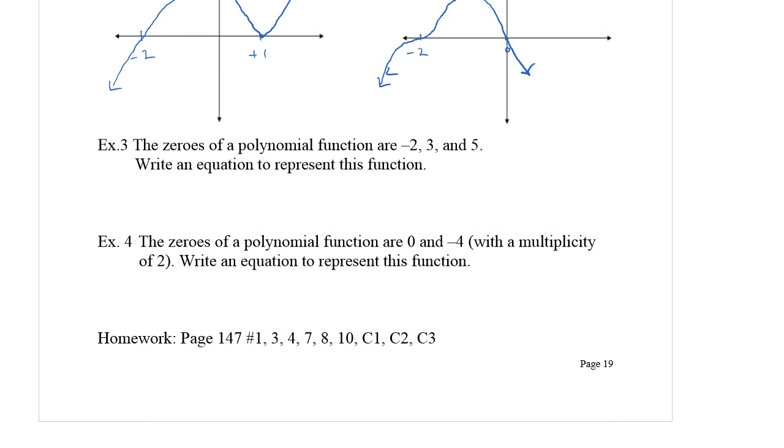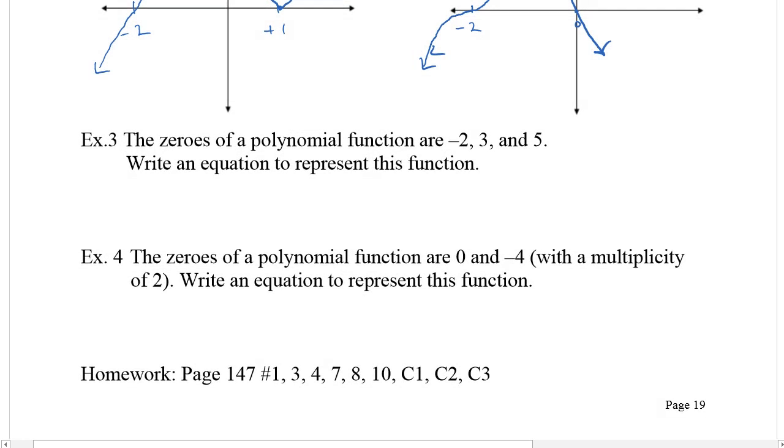Example number 3 says the zeros of a function are -2, 3, and 5. Write an equation to represent this function. A zero of negative 2 would be (x+2), with a zero of 3 would be (x-3), and the zero of 5 would be (x-5). Because it says equation, you definitely have to have an equal sign. Traditionally, we either put y or f(x). So we'll say y equals that.